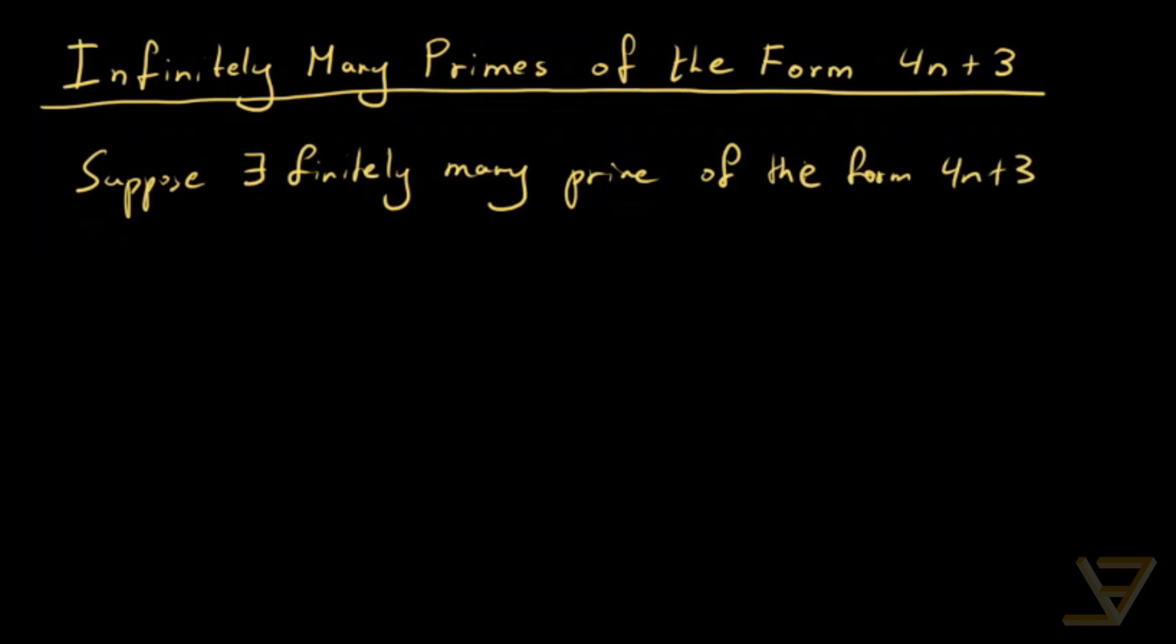Primes of the form 4n+3, in other words primes p that are congruent to 3 mod 4. We'll say that this complete list is p1, p2, all the way through to pm.